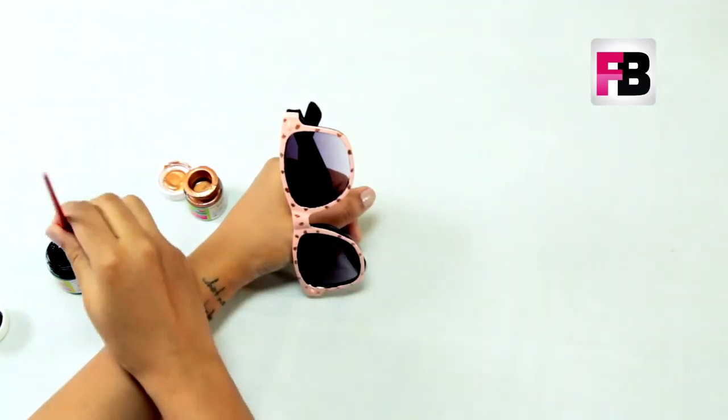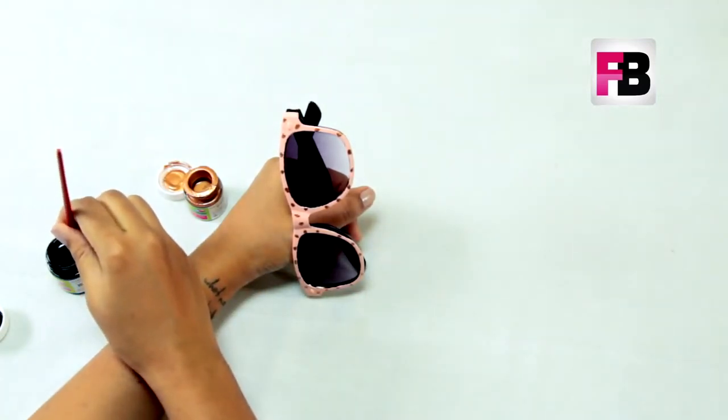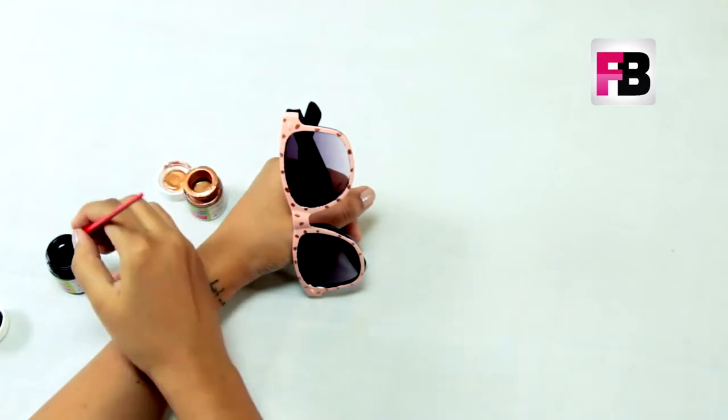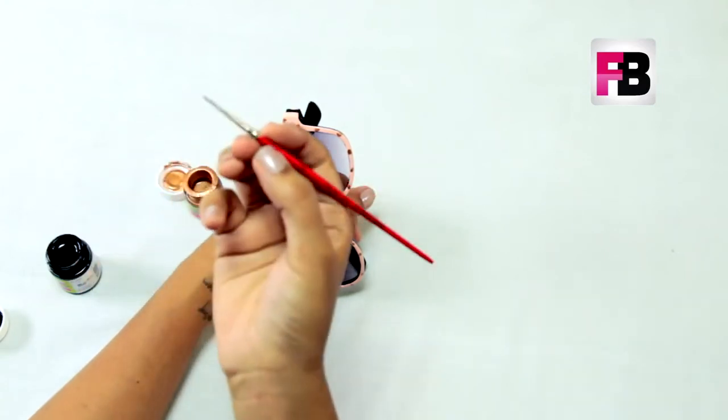Spots are done and now we need to outline them with black. Here, you need to maintain a really thin tip. So be sure of it.